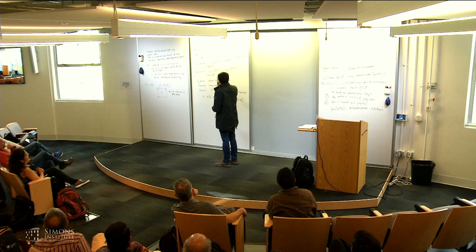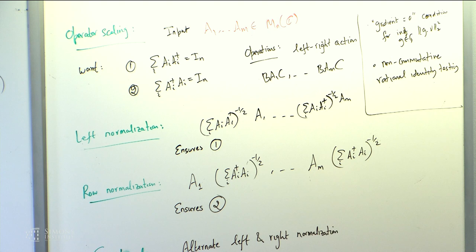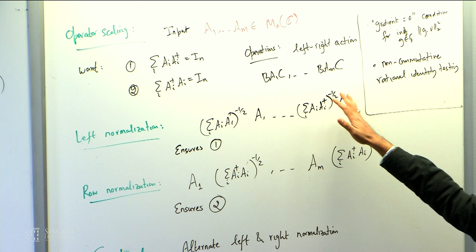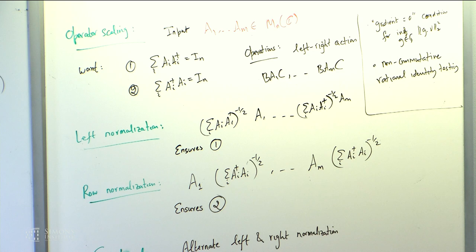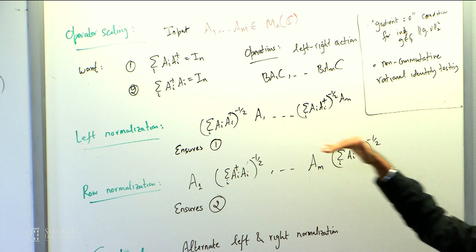In operator scaling, you have M input matrices — not non-negative, they have complex entries. You want them to satisfy two conditions: sum over i of A_i A_i† equals identity, and sum over i of A_i† A_i equals identity. The allowed operations are the left-right action: you pick invertible matrices B and C and simultaneously pre- and post-multiply them on all the A_i's. This turns out to be the gradient-equals-zero condition for the norm-square minimization for the corresponding group action.